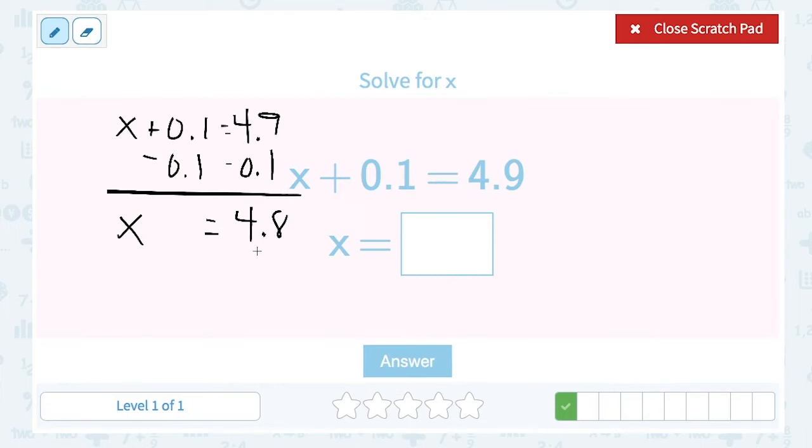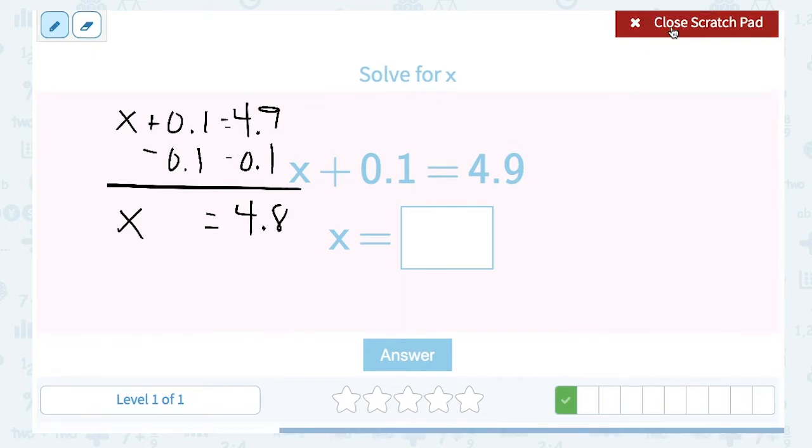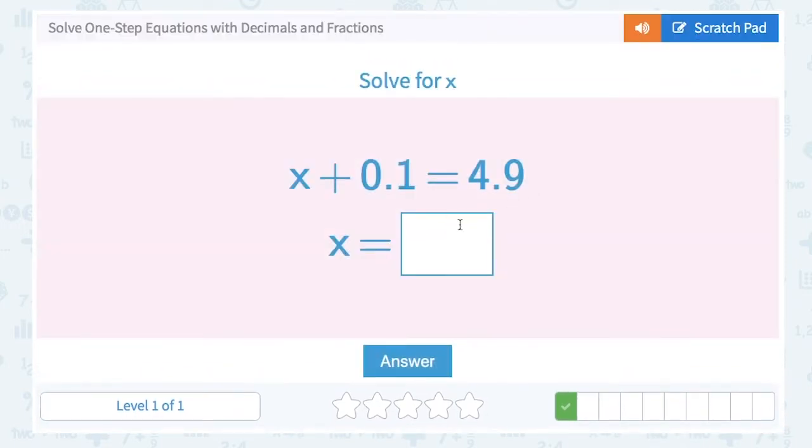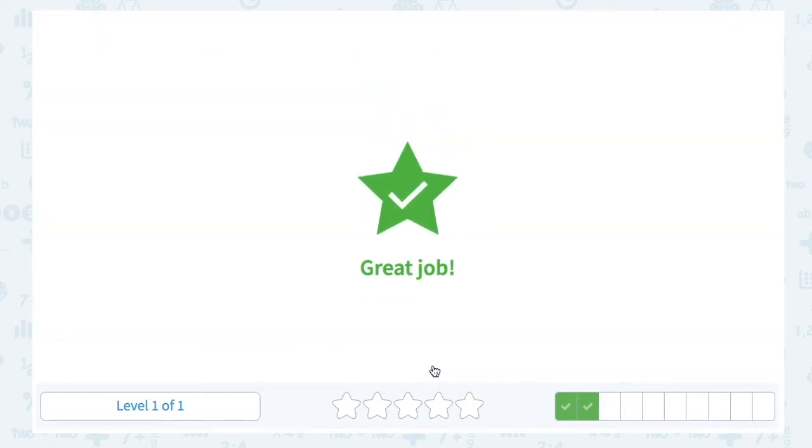I'm going to do a quick mental check on this one. If I go up here and mentally put in 4.8: 4.8 plus 0.1 - well, 0.8 plus 0.1 is in fact 0.9, so I can see that I've done the work correctly. 4.8 should be our answer.